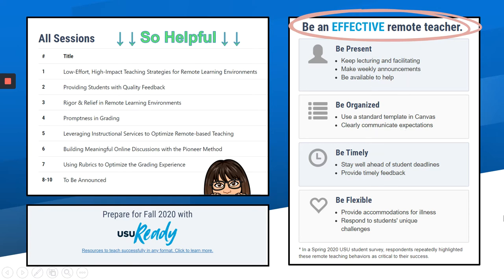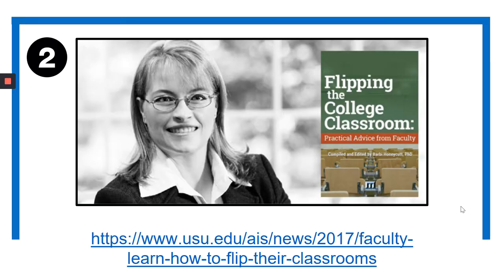These videos really emphasize four characteristics that we see in effective remote teachers — and by the way, these four characteristics were identified by USU students in a survey conducted spring 2020, just last semester when we were all asked to go online. The four things that came up repeatedly as being effective and helpful were: instructors who are present, organized, timely, and flexible.